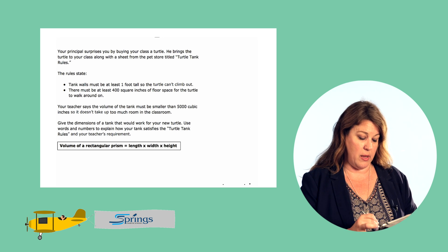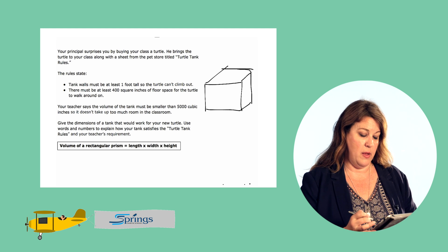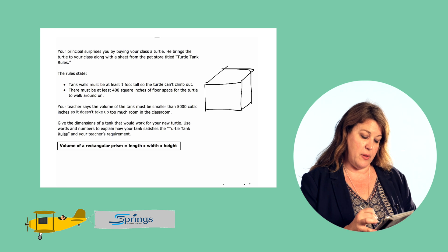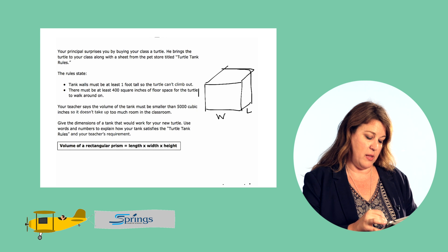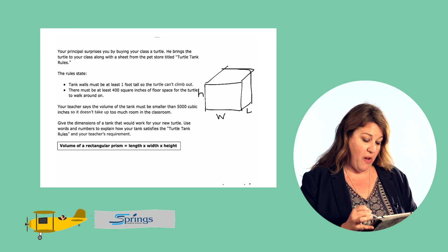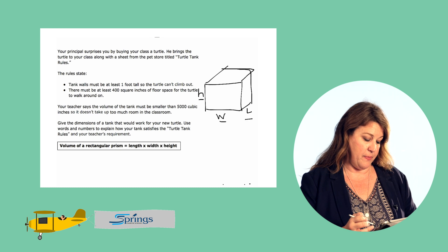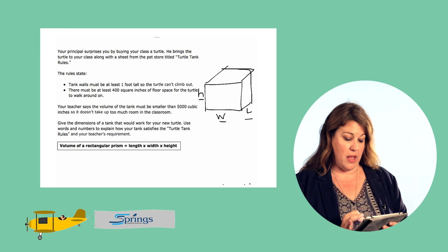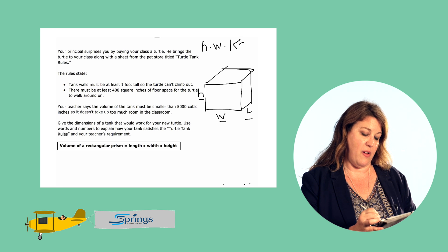So let's draw our tank. We have a rectangular prism, so we have the width, the length, and the height. Our tank has to meet these criteria. The volume — height times width times length — has to be less than 5,000 cubic inches. So height times width times length must be less than 5,000.